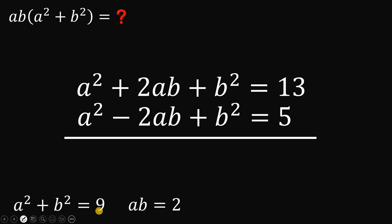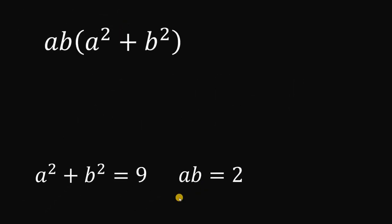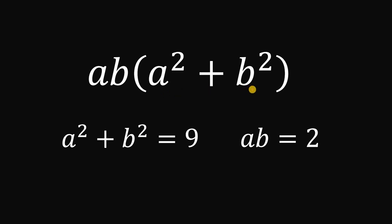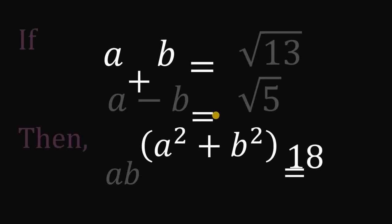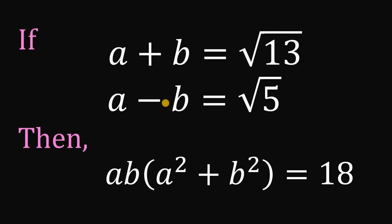We now have a squared plus b squared equals 9, and ab equals 2. So we can easily evaluate ab multiplied by a squared plus b squared: it's simply 2 times 9, which equals 18. That is the answer — if a plus b equals square root of 13 and a minus b equals square root of 5, then ab times a squared plus b squared equals 18.